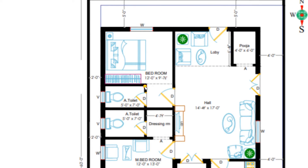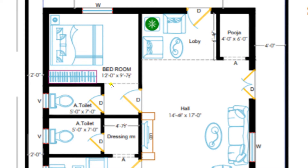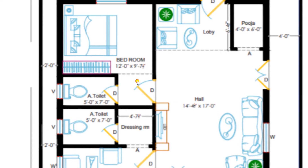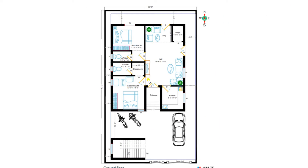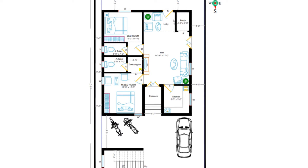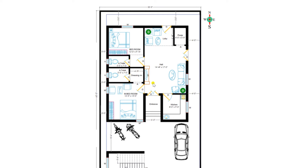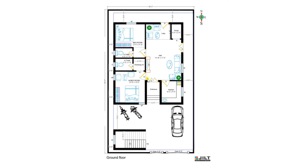Now I am entering to the bedroom — one more bedroom of size 12 feet by 9 feet 7.5 inches. Here we have plotted a bed and wardrobe. It is also having an attached toilet of size 5 feet by 7 feet. So in the ground floor, according to the client requirement, we have plotted 2 BHK: 2 bedrooms, 1 hall and 1 kitchen. Now let's move on to discuss about the first floor.